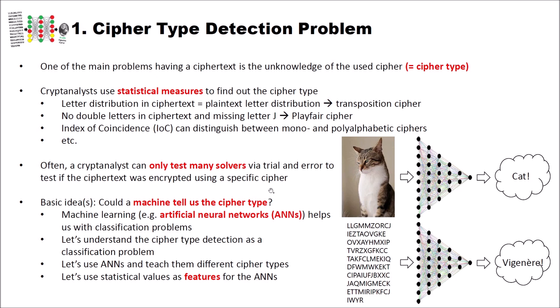Machine learning — for instance, artificial neural networks — helps us with classification problems. Here on the right side, we have a model of an artificial neural network that can detect if a picture contains a cat. The picture is given to the network, data flows through to the output layer, and then the network tells us 'this is a cat.' Now let's understand the cipher type detection problem as a classification problem and use artificial neural networks, teaching them different cipher types.